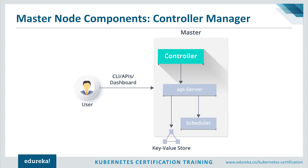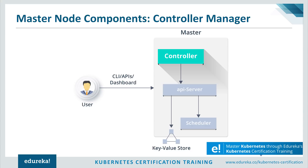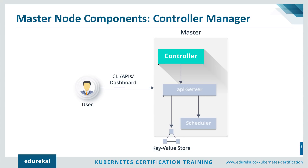The next component is the controller manager. The controller manager manages different non-terminating control loops which regulate the state of the Kubernetes cluster. Each control loop knows about the desired state of the object it manages, and watches the current state through the API server. If the current state does not meet the desired state, the control loop takes corrective steps to make the current state match the desired state.